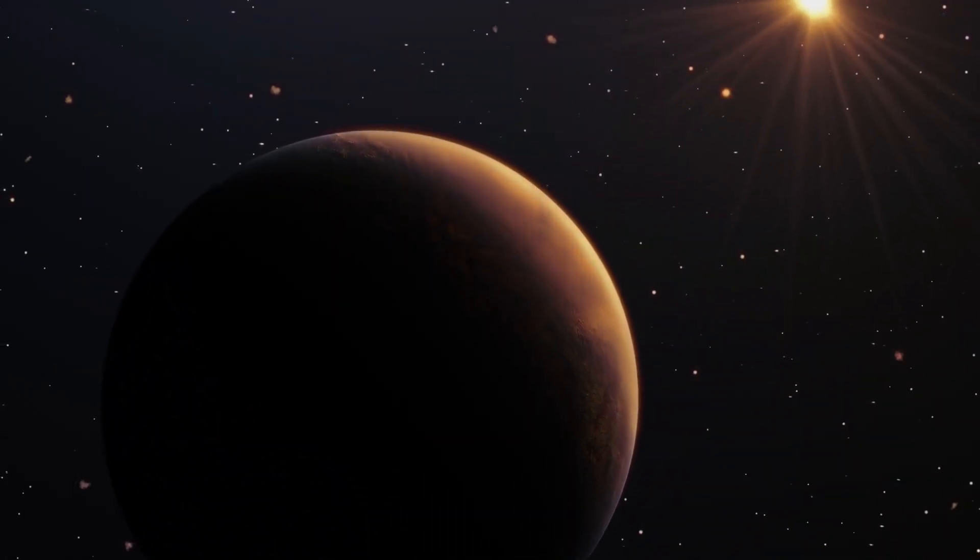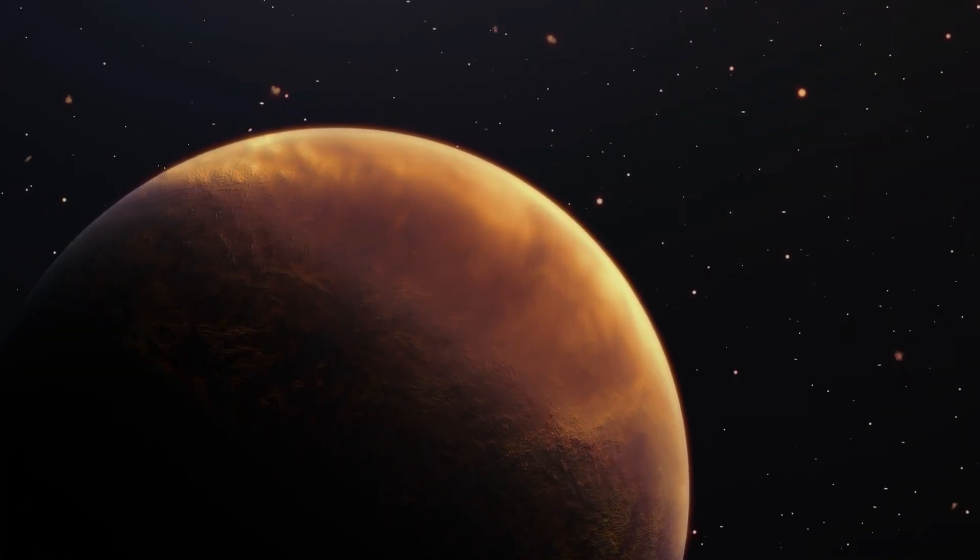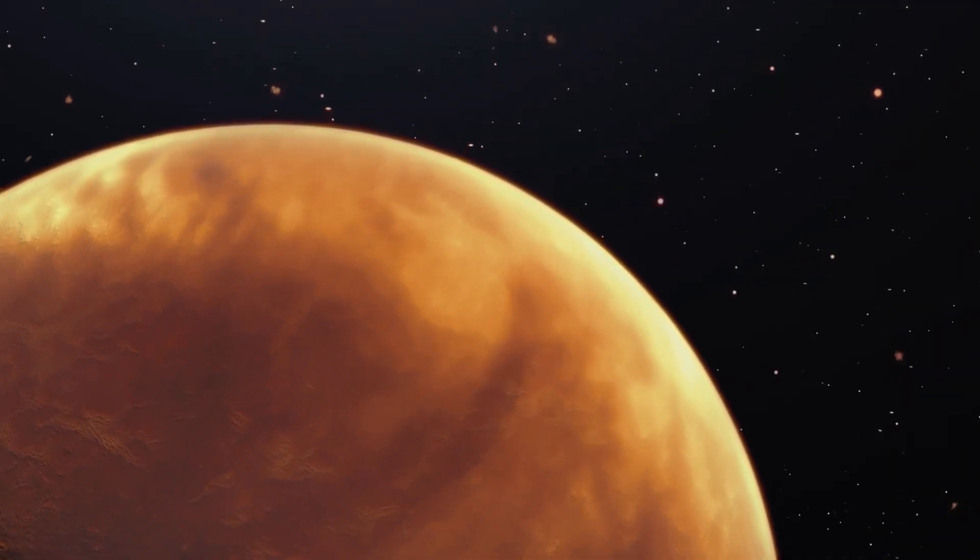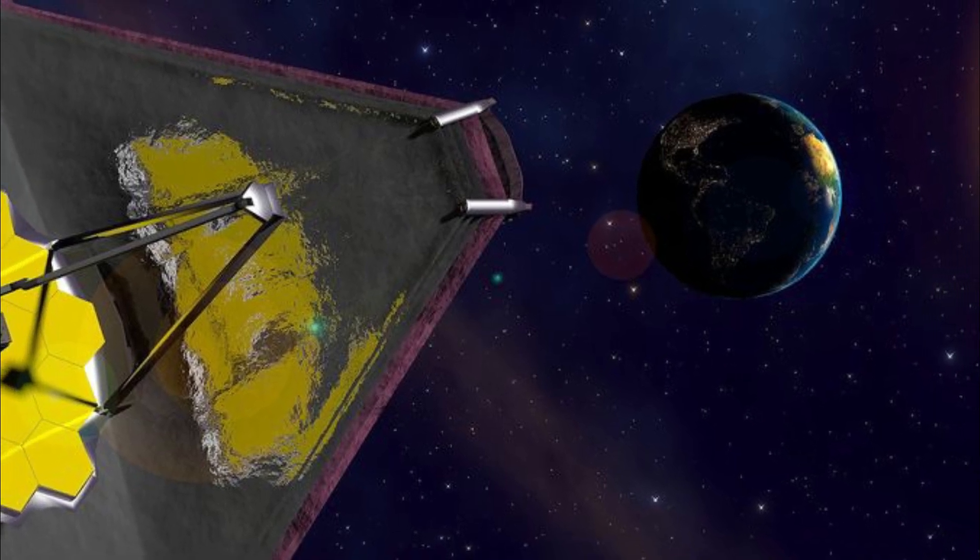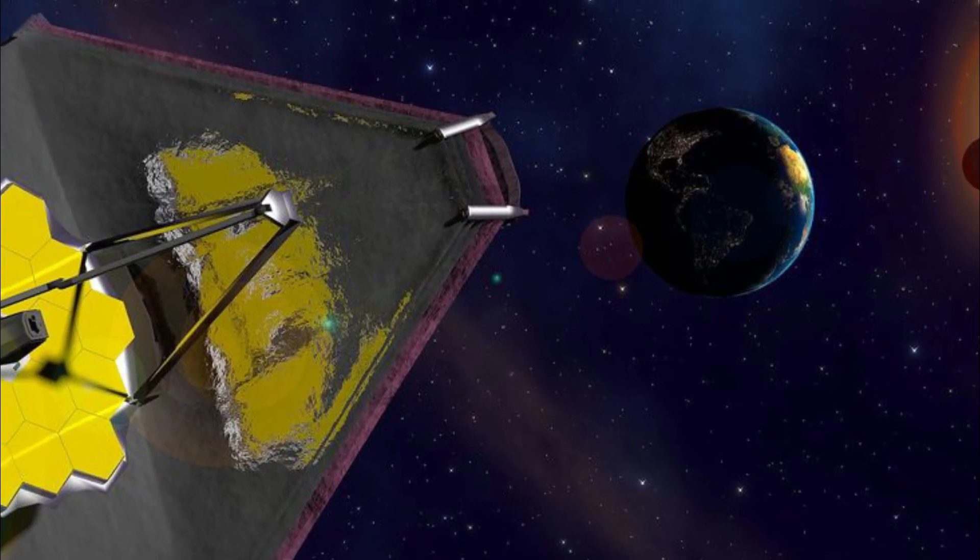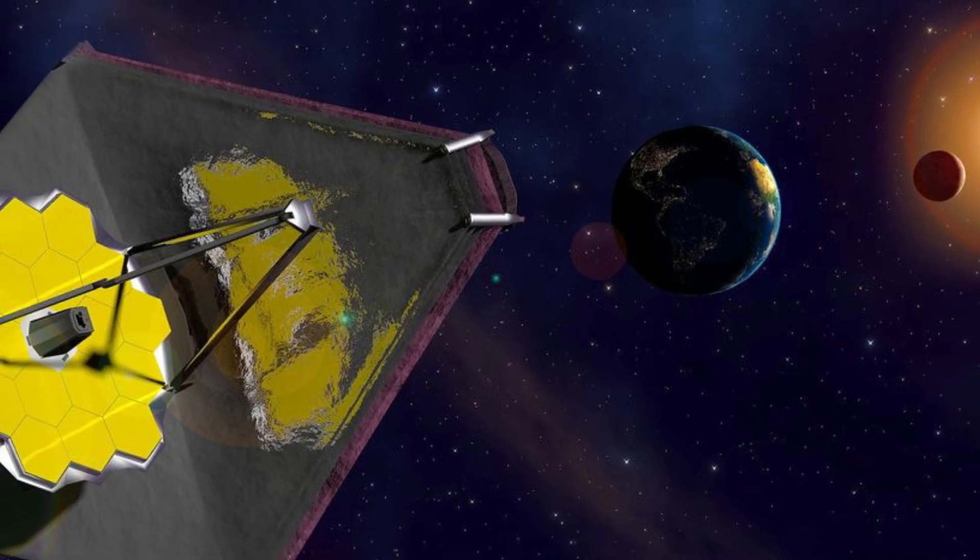NASA's James Webb Space Telescope (JWST) has made a monumental breakthrough in the search for extraterrestrial life, confirming the presence of biosignatures on Proxima b, an exoplanet that has captured the attention of scientists for years.